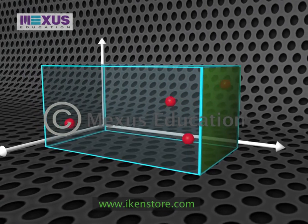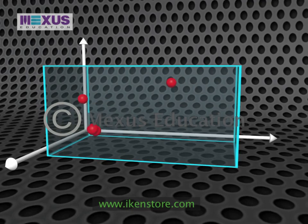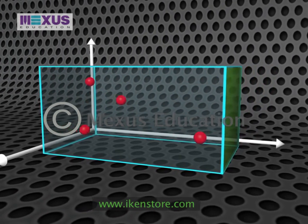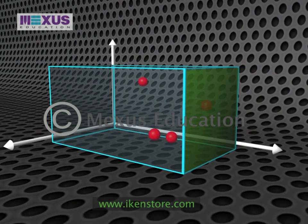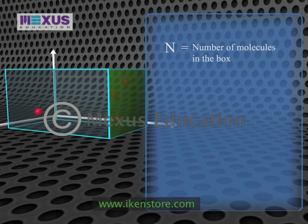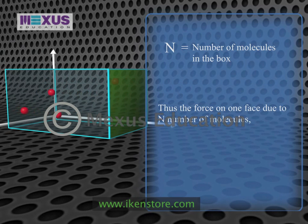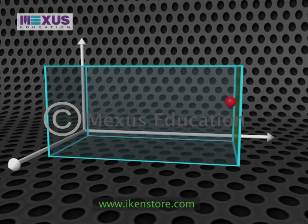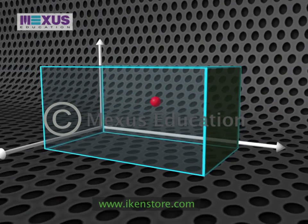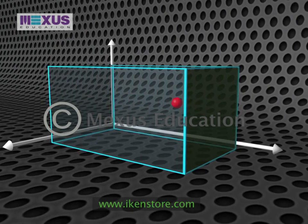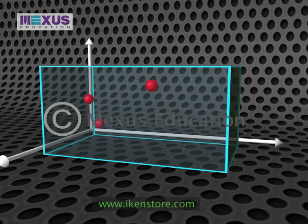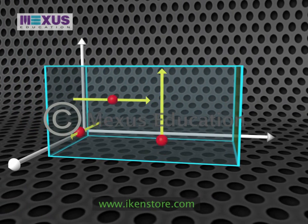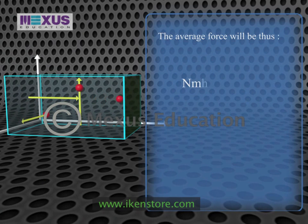Now, we do expect a large number of molecules in the box all going backward and forward. Since we can't specify the exact number, we give it the symbol N. The force on one face due to N molecules bouncing backward and forward will be N × MV²/V. Also, the molecules will not just be moving sideways — they will be going up and down and backward and forward. Since there are three possible directions in which they can travel, the average force will be divided by three.